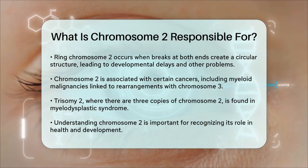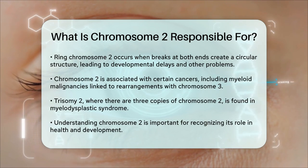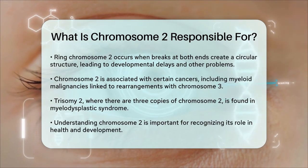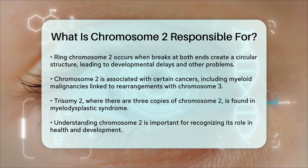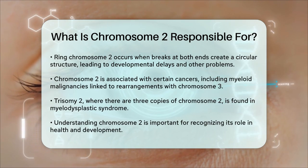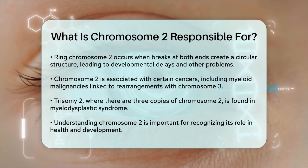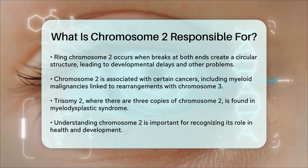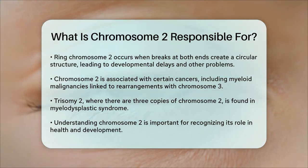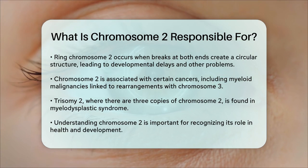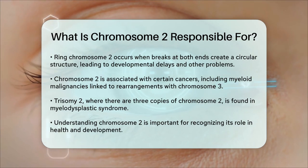Chromosome 2 is also implicated in certain types of cancer. For example, rearrangements between chromosomes 2 and 3 have been associated with myeloid malignancies, and trisomy 2, where cells have three copies of chromosome 2, is found in myelodysplastic syndrome.